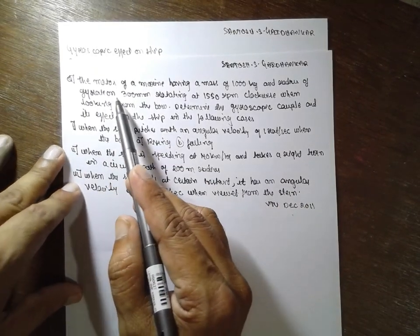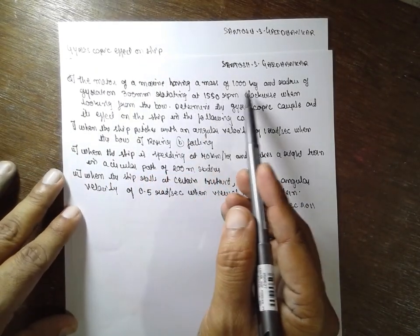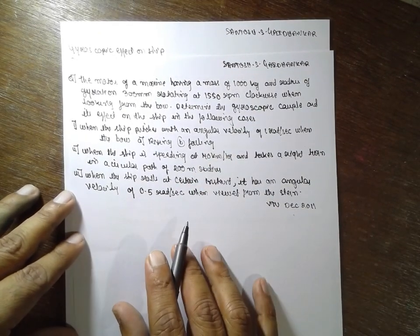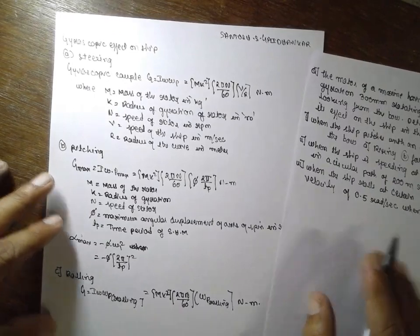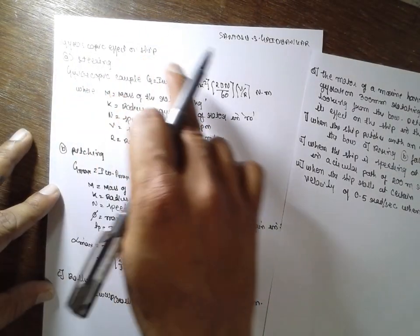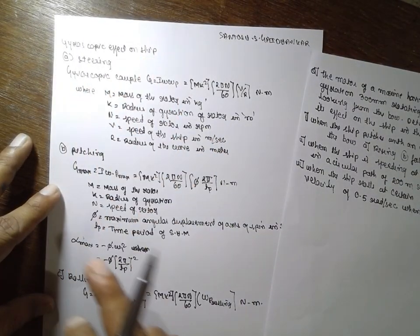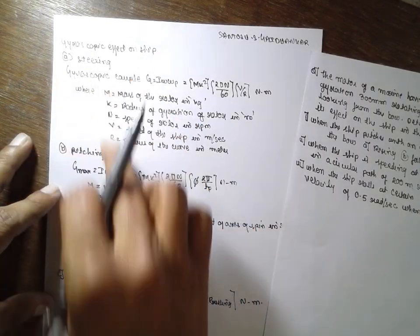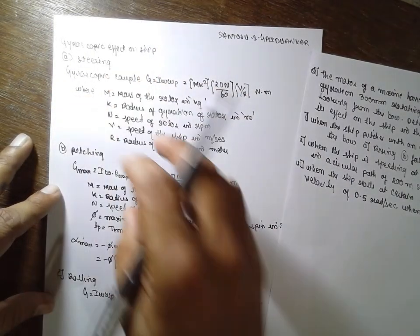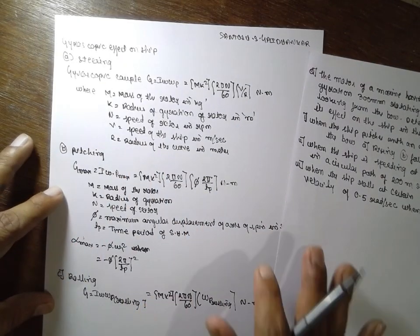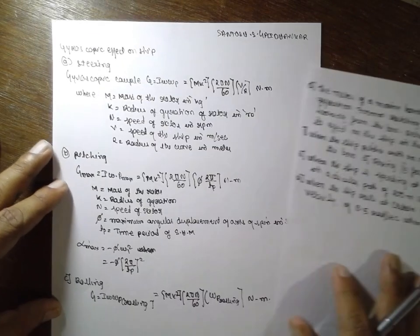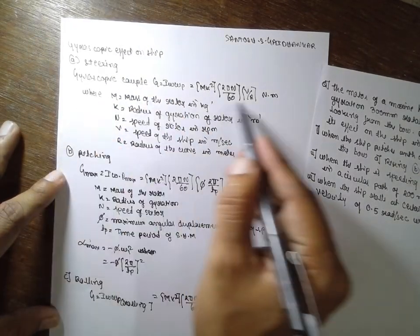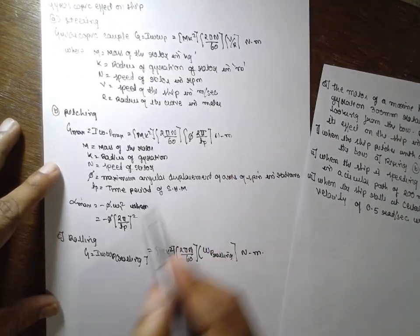This is the problem of a marine motor having a mass of 1000 kg. This is the list of formulas for the effect on a ship — one more video is already uploaded on YouTube. These are the derived formulas taken separately in order to solve the problems. There are three mechanisms: steering, pitching, and rolling. Steering — this is the formula; pitching — this is the formula; rolling — this is the formula.